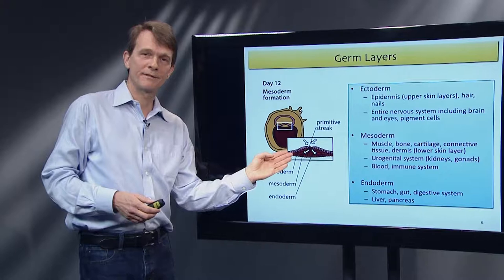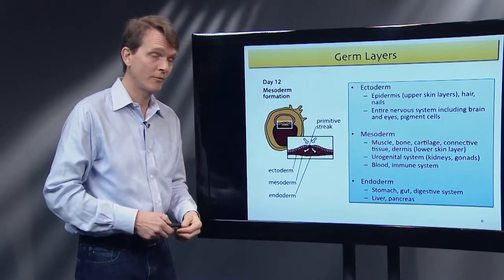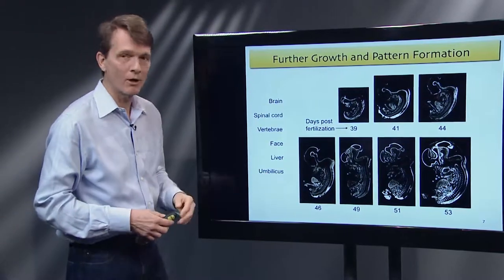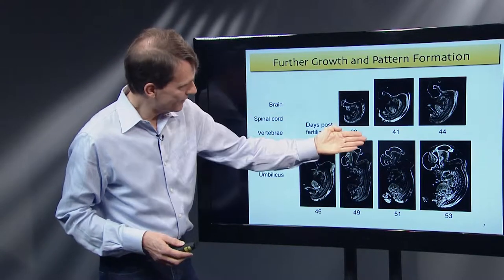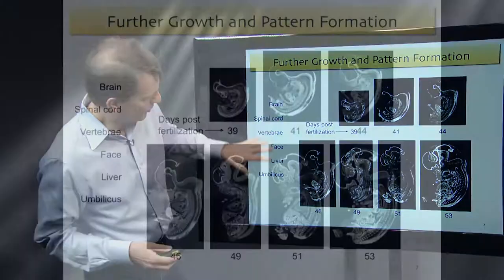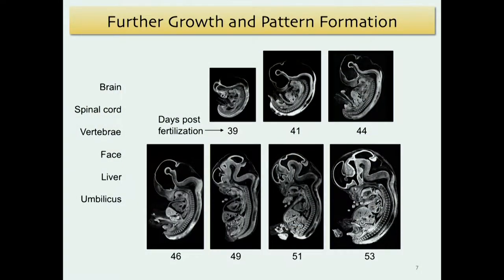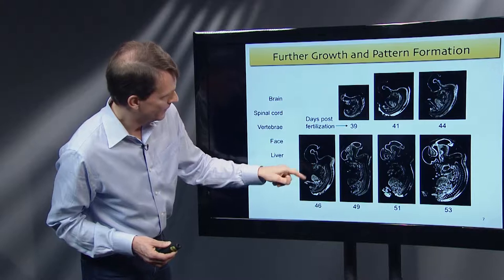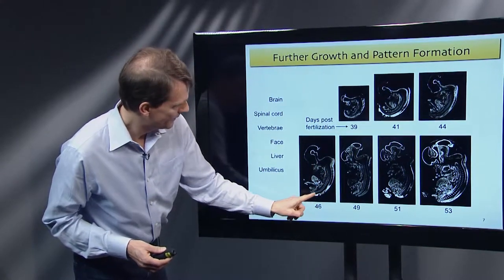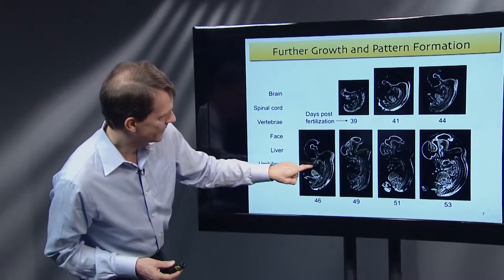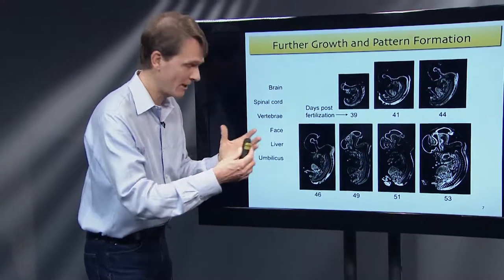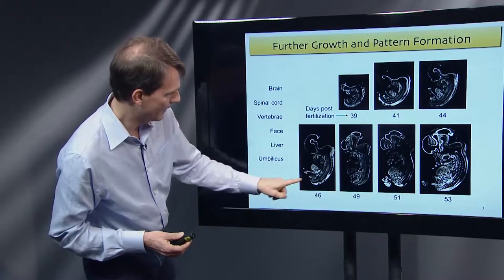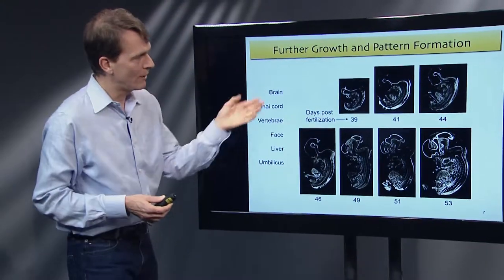All of this is set up very early in embryonic development and then further elaborated. Here are some MRIs of early human embryos — these are days post-fertilization, cross-sections. On one of the larger embryos you can see the brain, spinal cord, developing vertebrae, the face, and the liver. The brain is much larger than the face at this stage, and later processes reshape that. There's also the umbilicus. Embryonic growth proceeds, and eventually one gets a full-grown organism.